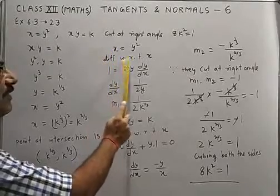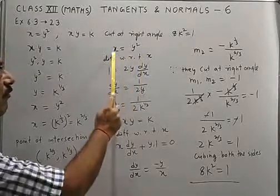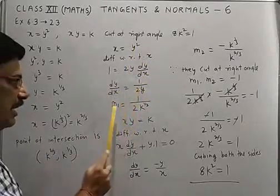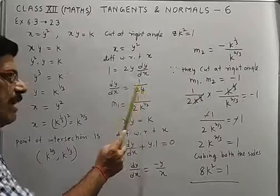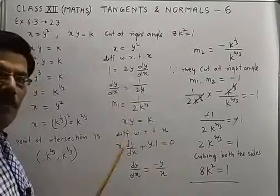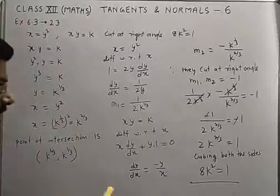Differentiate with respect to x: 1 = 2y·dy/dx. Now m₁ is equal to, replace y by k^(1/3), you get slope of first tangent.